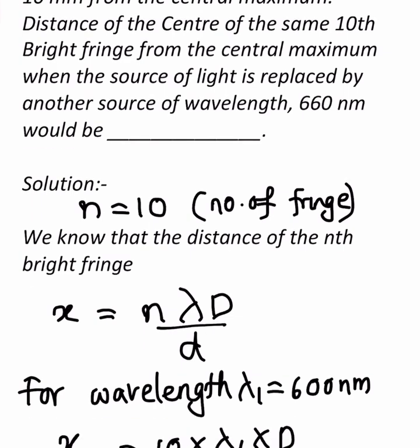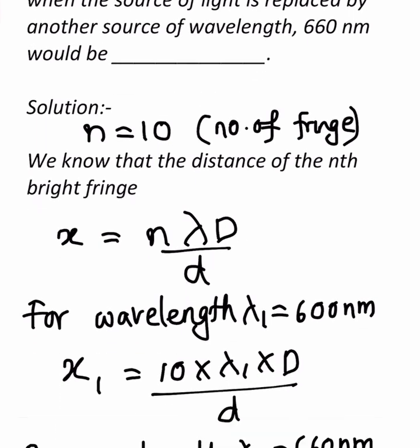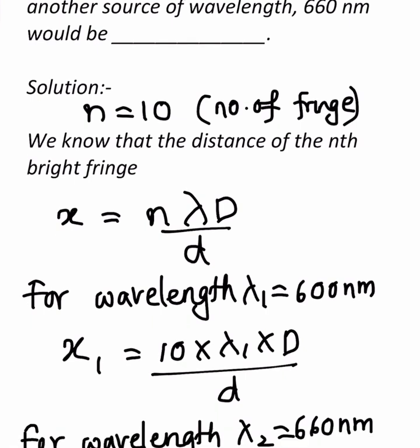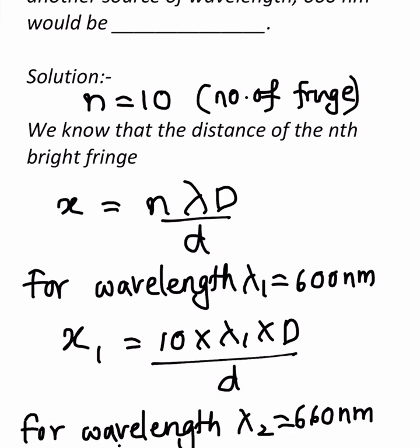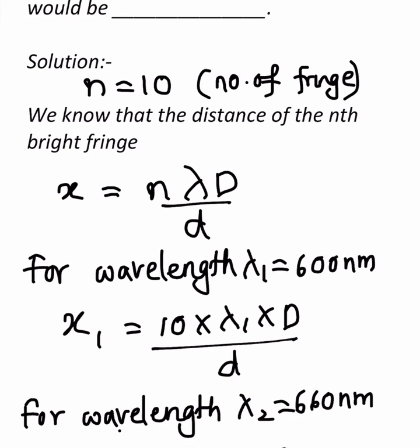This is a fill in the blanks question. Now let us see the solution. Here the number of the fringe is 10, therefore n is equal to 10. We know that the distance of the nth bright fringe formula is x = n·λ·D / d.